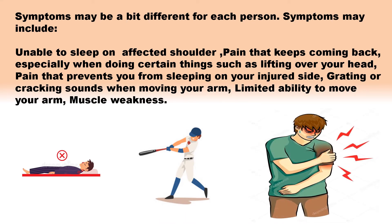Symptoms may be a bit different for each person. Symptoms may include: inability to sleep on the affected shoulder, pain that keeps coming back especially when doing certain things such as lifting over your head, pain that prevents you from sleeping on your injured side, grating or cracking sounds when moving your arm, limited ability to move your arm, and muscle weakness.